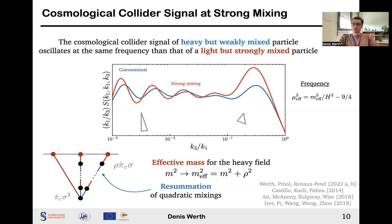And with the cosmological flow, we essentially show that the cosmological collider signal of heavy but weakly mixed particles oscillates at the same frequency than that of a light but strongly mixed particle. This effect can be understood as a mass resummation. We consider an infinite number of quadratic mixings in the double exchange diagram that leads to an effective mass. Essentially, the propagation of the heavy field is affected by the surrounding massless field medium that interacts with it, leading to a self-energy correction. Although this degeneracy was already noticed in the literature, the cosmological flow allows for complete and exact predictions, including, for example, the phase and the amplitude, which is necessary to break degeneracies.